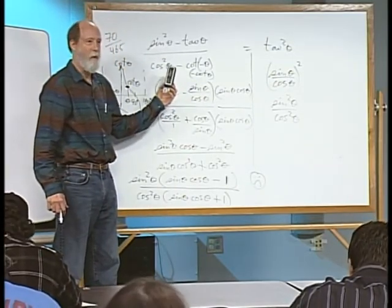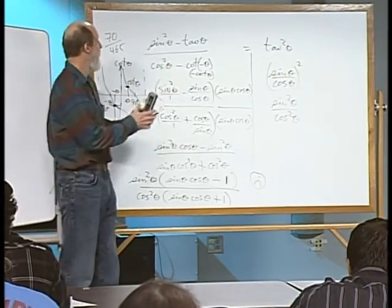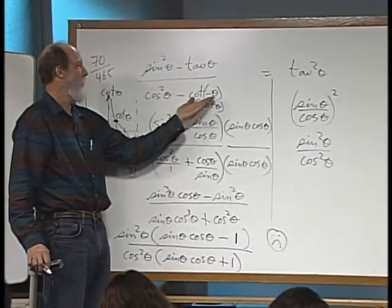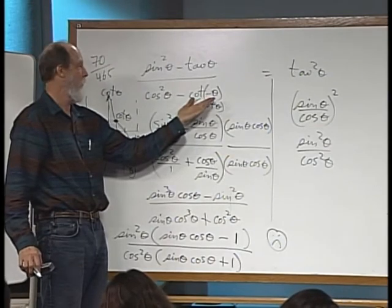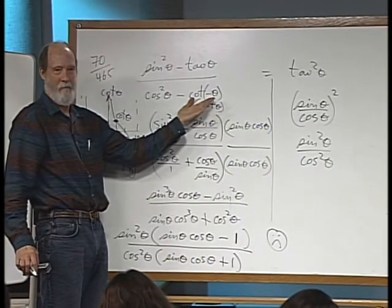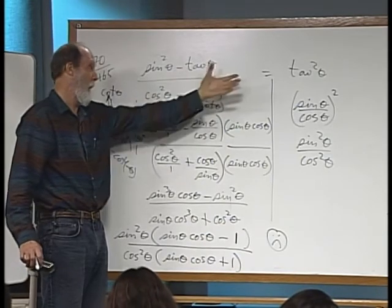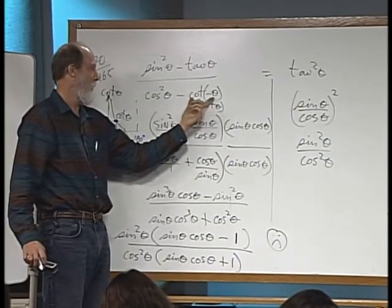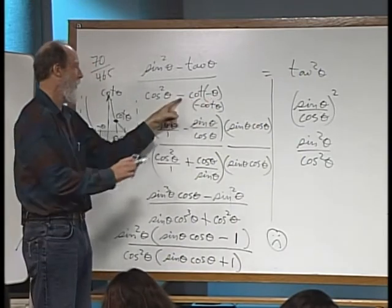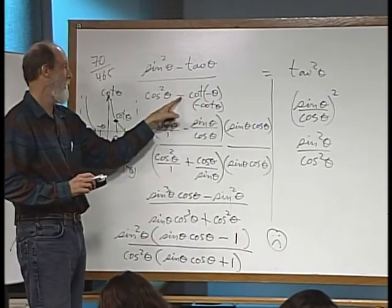But remember what I did when I started this problem? I monkeyed with it, didn't I? I came in and I changed what the textbook said was simply cotangent theta here. Now what I should have done to make this identity work, if I was going to put cotangent of minus theta in here, I should have changed this sign right here to a plus sign.